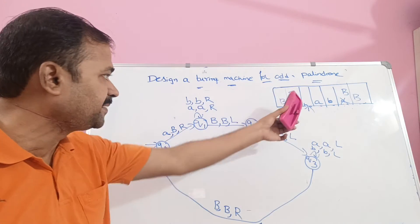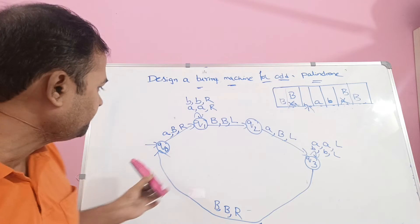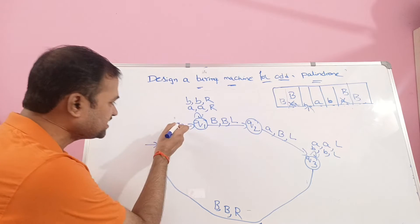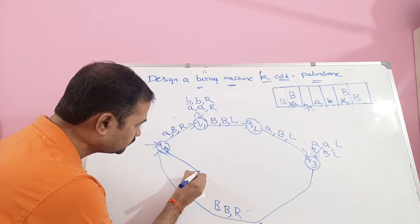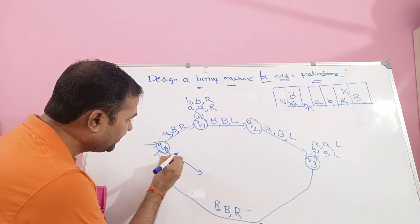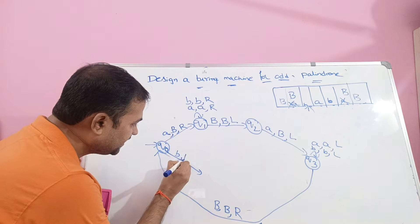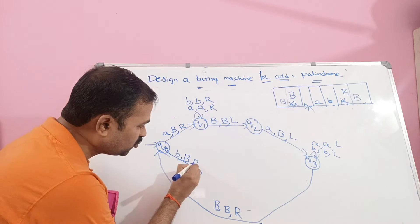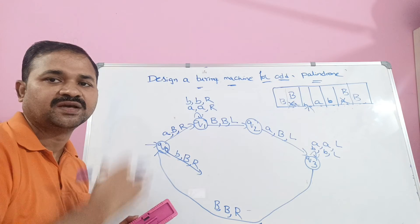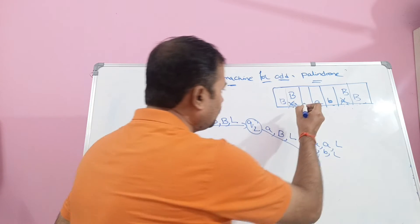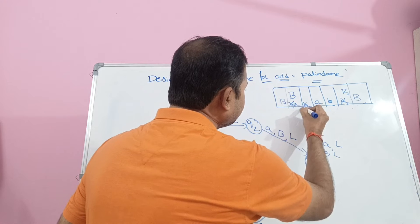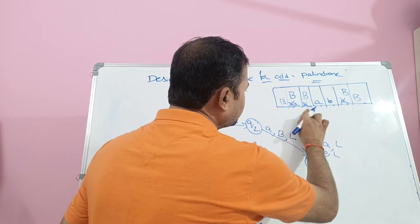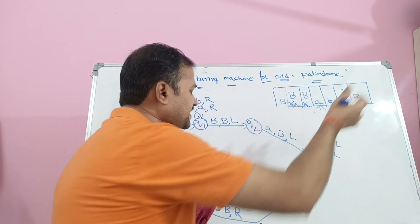Now we are at Q0 and we read B. If we read B on Q0, then change it to the blank symbol and move the head towards the right until we get the blank symbol. Translate this one into the blank symbol and move the head towards the right until we get the blank symbol.